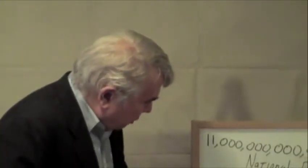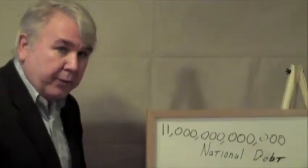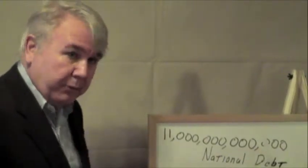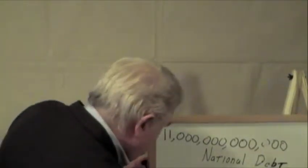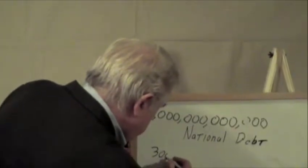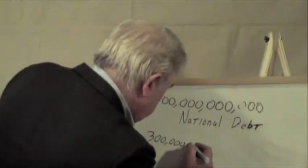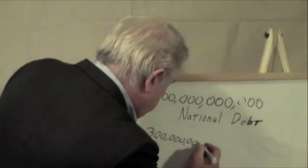Now we're going to do this in long division. Everyone grab a pencil and a piece of paper. This is our National Debt right here, boys and girls. We're going to divide it by 300 million because that's the number of people in the United States. So we're going to take the number 300 — that's 300, that's a thousand, that's a million.